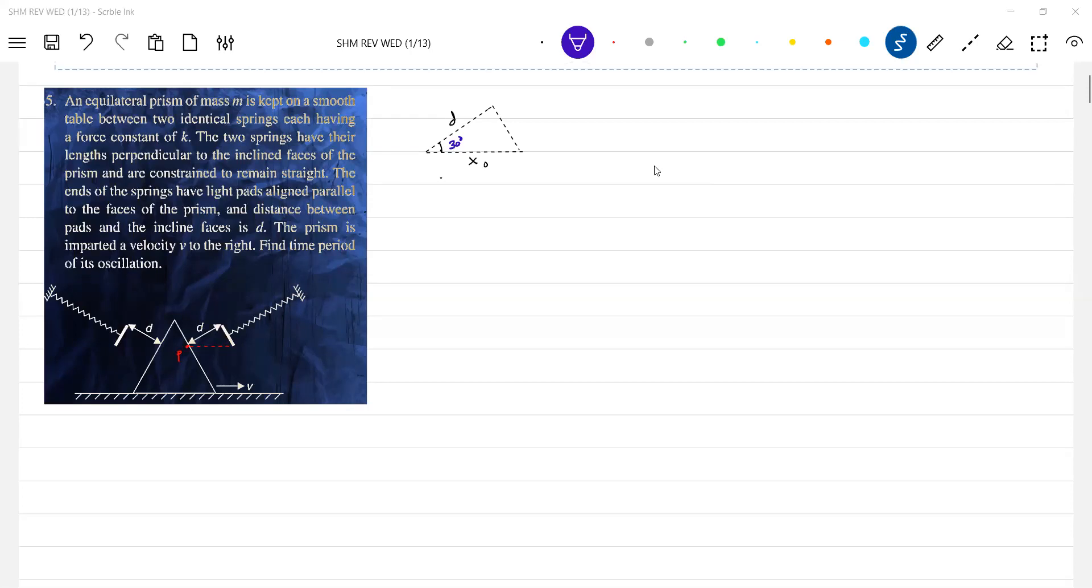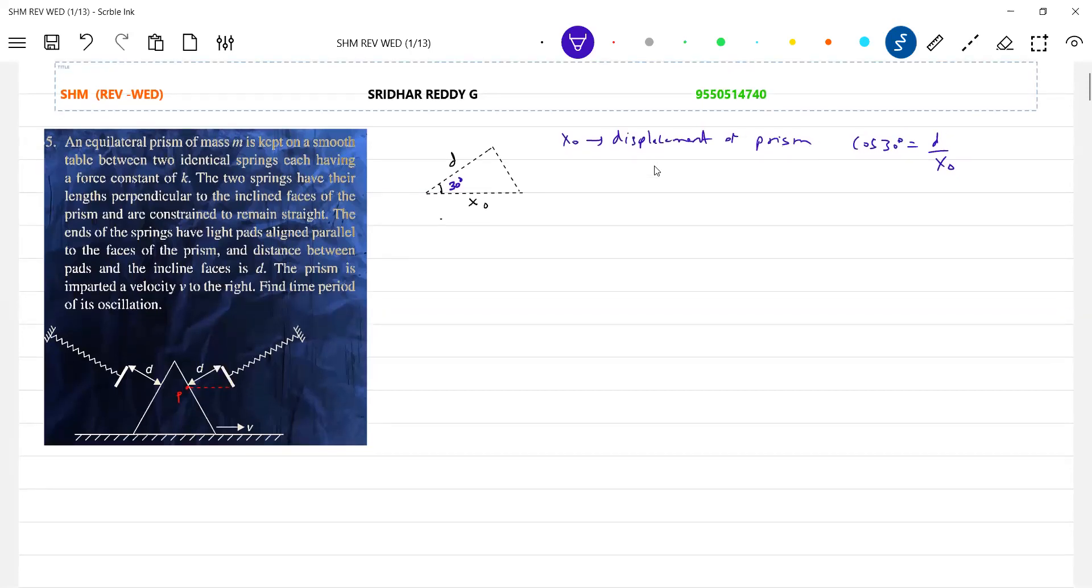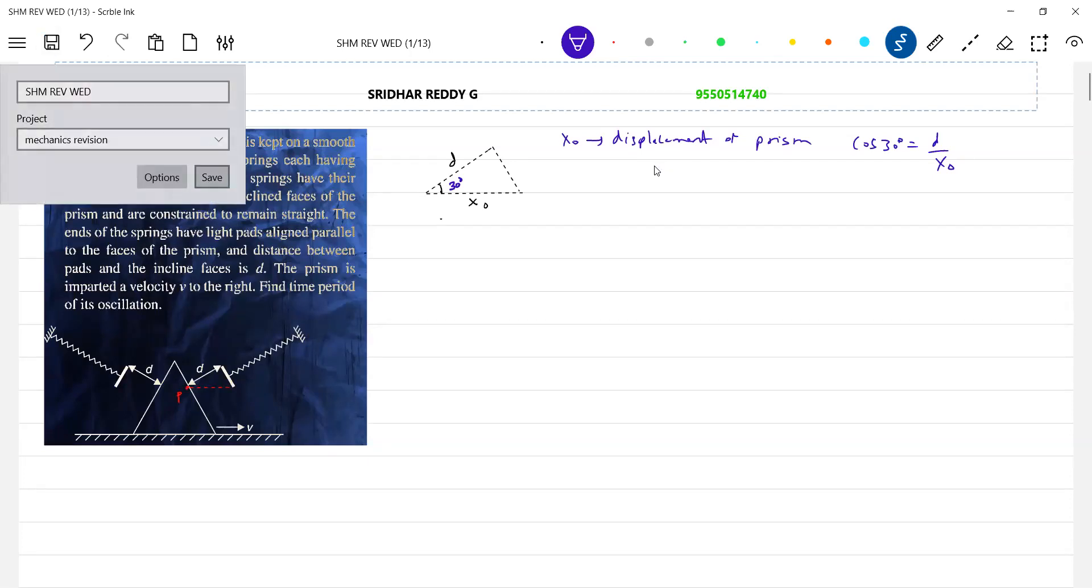So what is X naught? X naught is the displacement of prism. So cos 30 will be D by X naught. We will discuss numericals on prism, somebody is asking. So today, sorry, we'll discuss numericals in a session. I just picked up questions on a session.